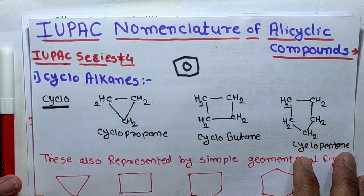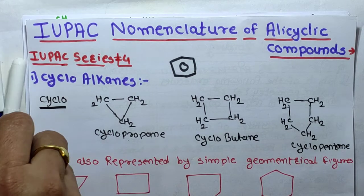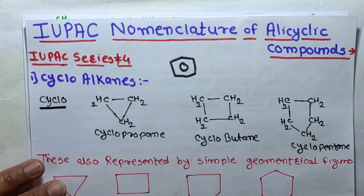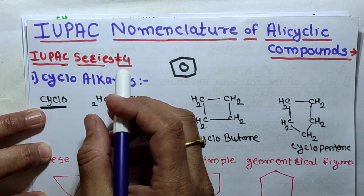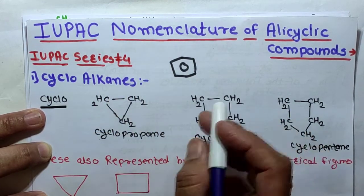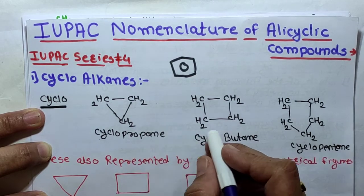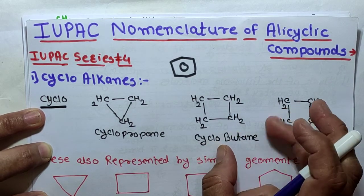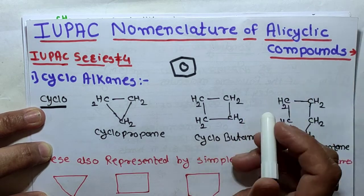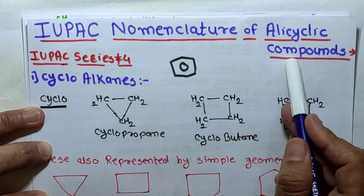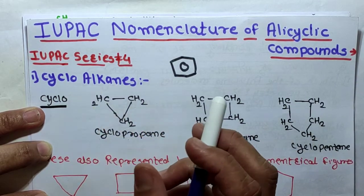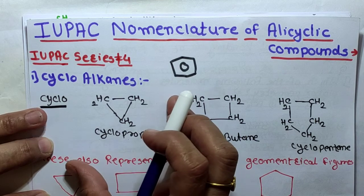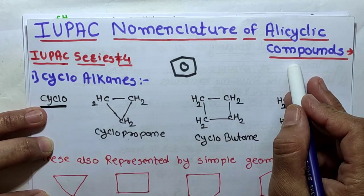Welcome to my channel. In this channel I teach chemistry and maths in the simplest way. Today's topic is IUPAC nomenclature of alicyclic compounds — this is IUPAC series 4. I already uploaded IUPAC series 3 for alkanes, alkenes and alkynes, and on functional groups of aliphatic compounds. In this video I will discuss IUPAC nomenclature of alicyclic compounds: cycloalkanes, cycloalkenes and cycloalkynes.